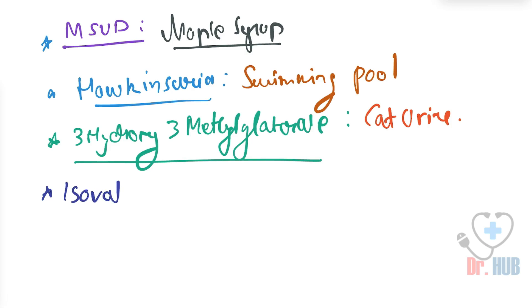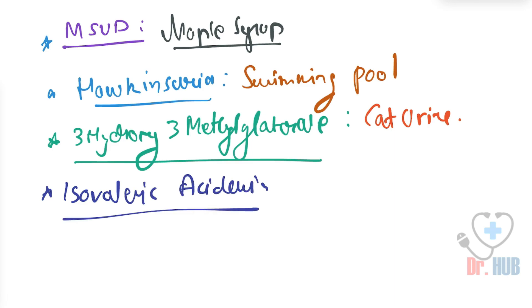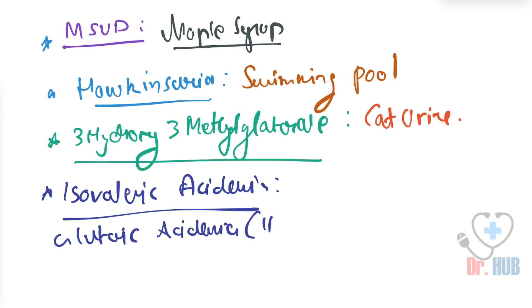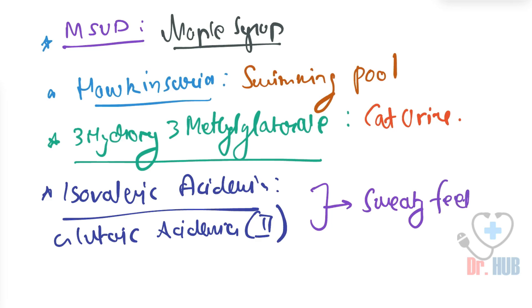Next we have isovaleric acidemia and also glutaric acidemia type 2. Both of these result in a sweaty feet odor.